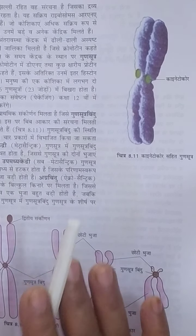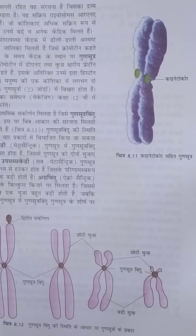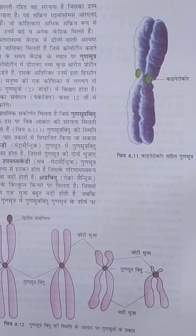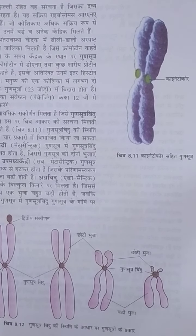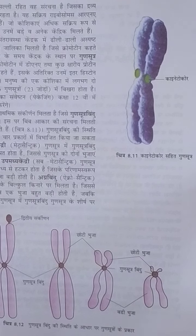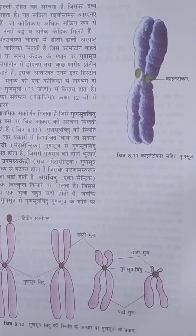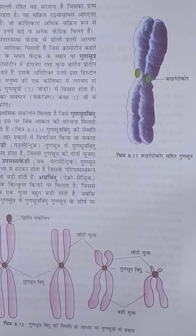Some organisms and their chromosome numbers from the book: Amoeba (protist) — 250; Penicillium (fungi) — 7; rice plant — 24; wheat plant — 42; house fly — 12; frog — 26; human beings — 46.